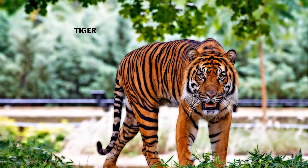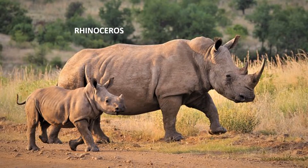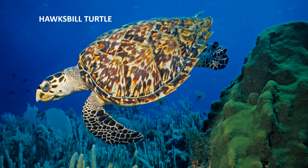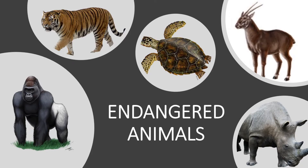Some animals like the tiger, rhinoceros, cross river gorilla, and hawksbill turtle are very few in numbers. These animals will disappear soon if we don't protect them. They are called endangered animals.